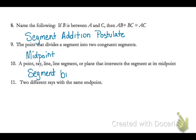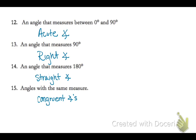Number 10 is the segment bisector. Number 11, two different rays with the same endpoint is an angle. 12, between 0 and 90 is an acute angle. 13 measures exactly 90 is a right angle. 14 measures exactly 180 is a straight angle.